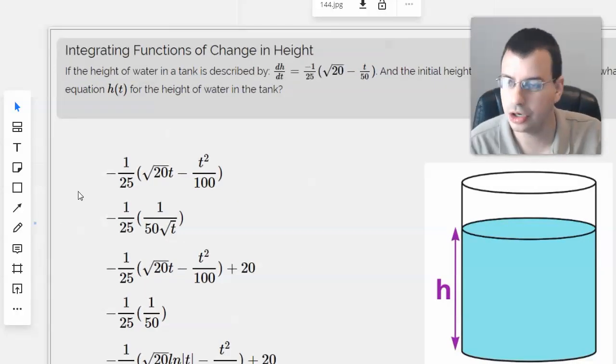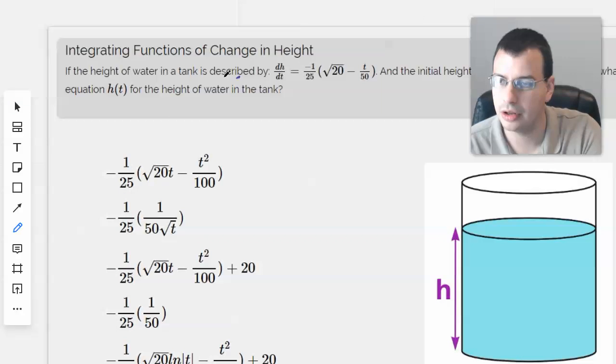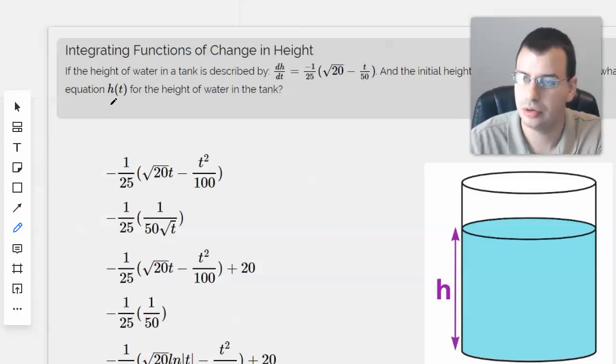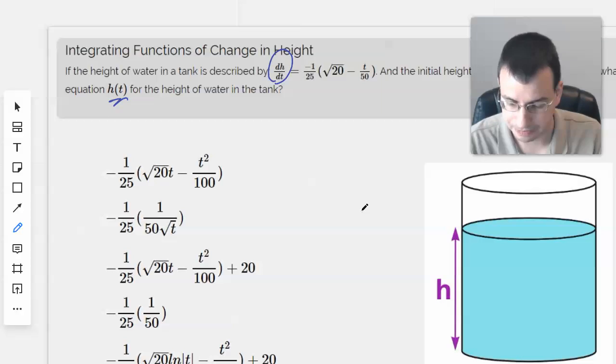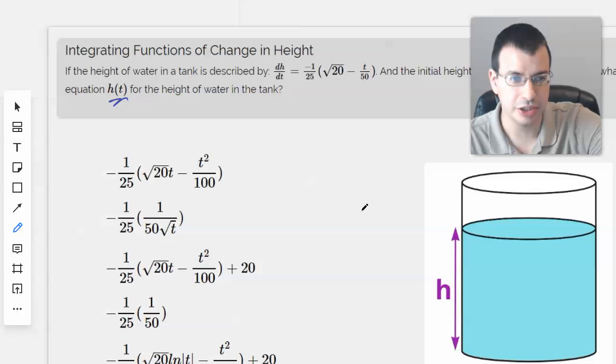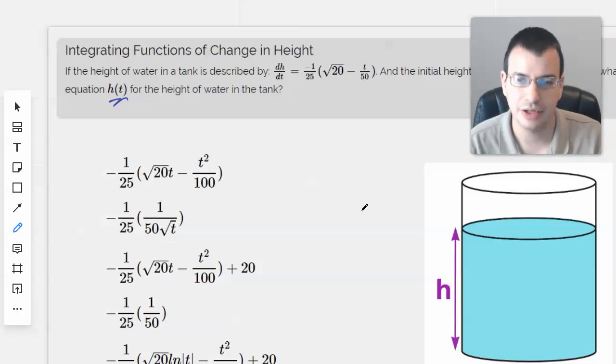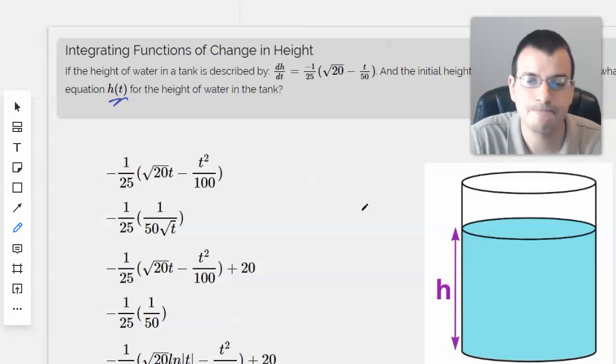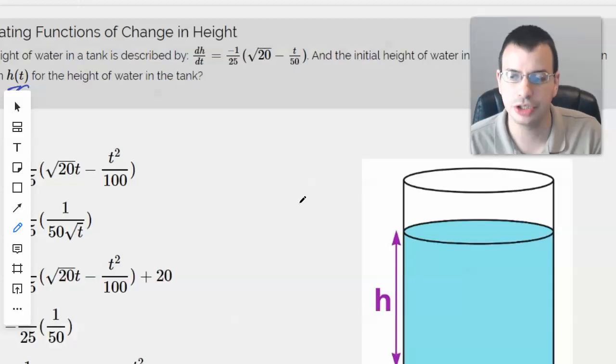Okay, so we're looking for H(t), which is a height. So we're looking for this right here, and we're given dH/dt. So we integrate derivative of height with respect to T, and we'll get height with respect to T. Looks pretty straightforward, so let's go for this.